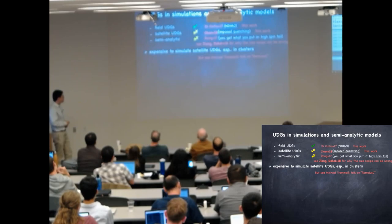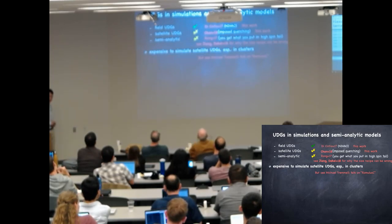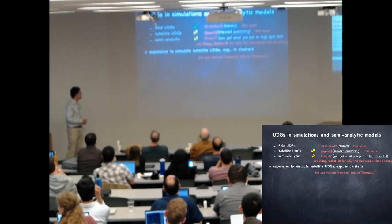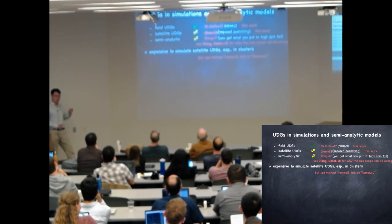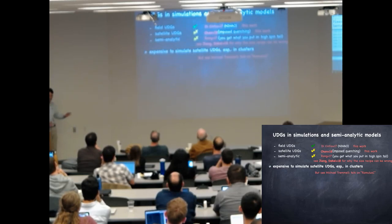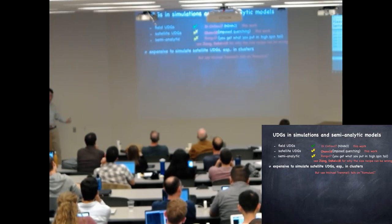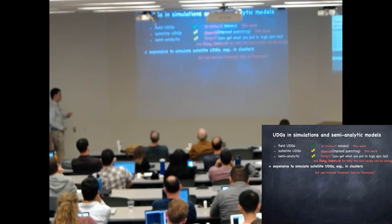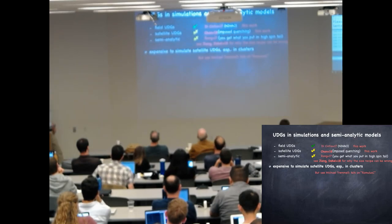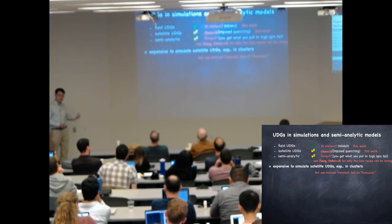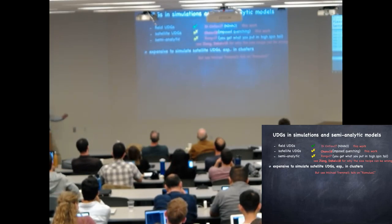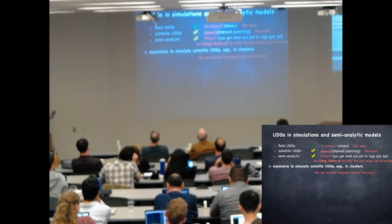Do we have UDGs as satellites, in clusters in particular? Not really. TK Chen, sitting in the audience, told us last year that you can cleverly manually quench the galaxies in the FIRE simulation to mimic what will happen in a dense environment, but that approach cannot fully capture environmental processes like tidal interaction. Do we have UDGs in semi-analytic models? Not really, because in SAMs the galaxy size is explicitly linked to halo spin - and I will show you shortly this is wrong.